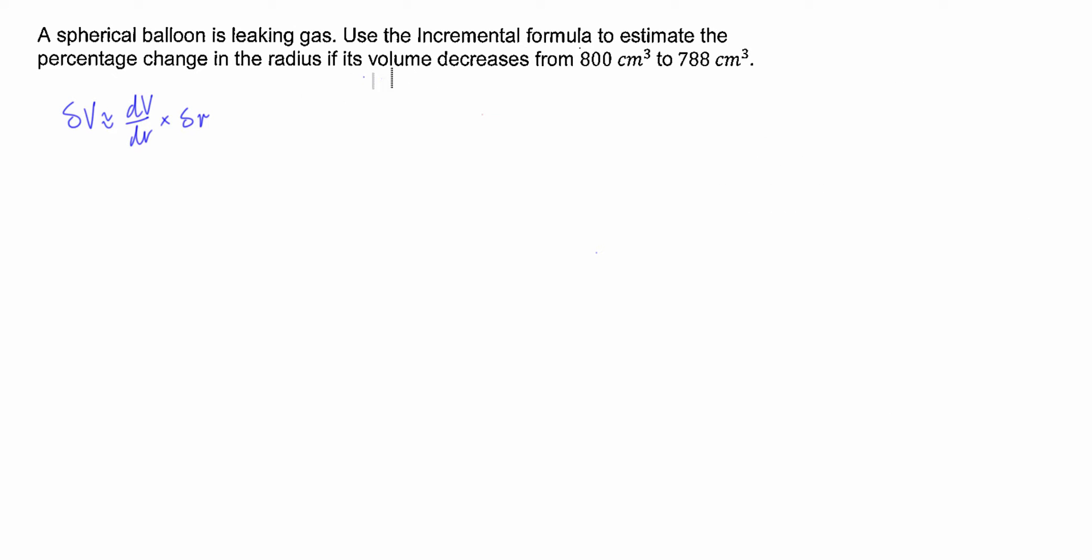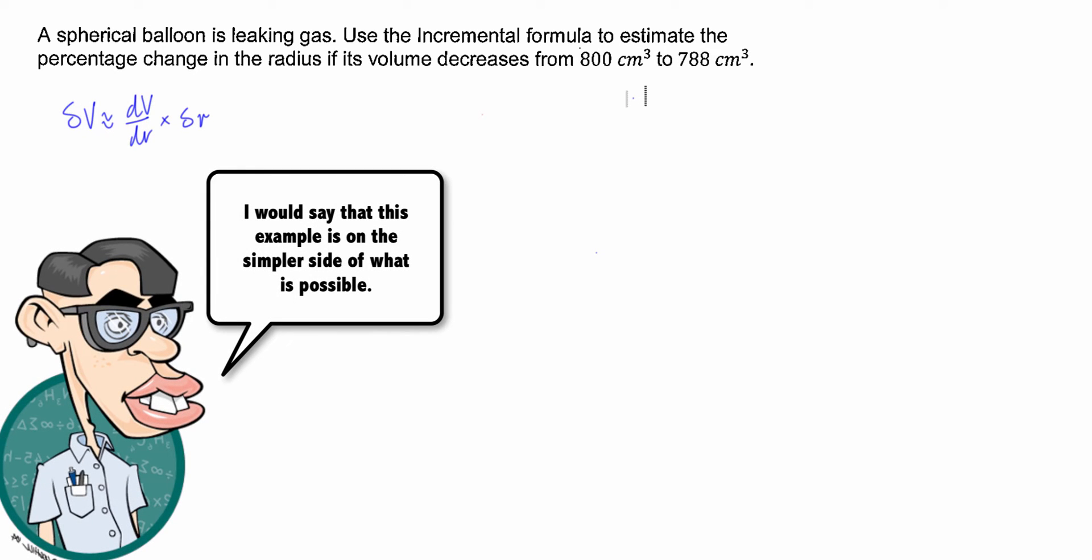So we're going to be looking for percentage change in the radius. So what we're actually going to be looking for in the end guys is we're trying to find delta r over r. So we're going to try and isolate that in the end. So it's good to have that in the back of our heads of what we're actually looking for in the end.